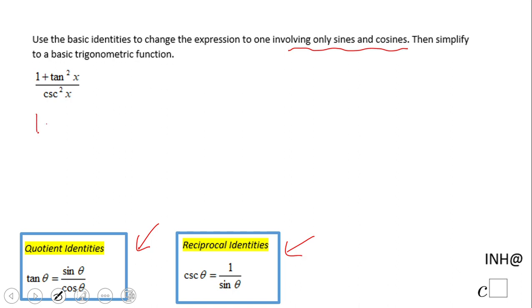Let's take a look at what we need to do. We have (1 + tan²x) / csc²x. Based on what they said, we're going to change tangent to sine over cosine.